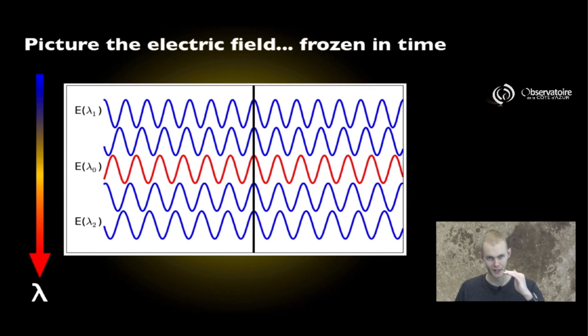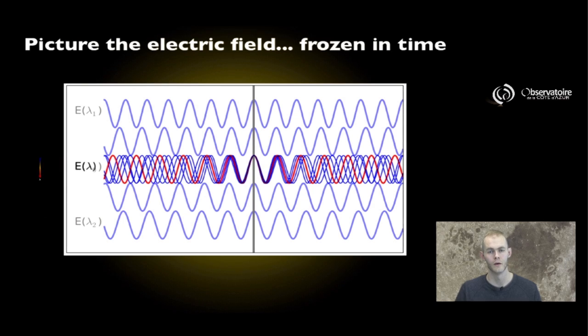If we collapse these electric fields altogether onto one single plot, that correspondence is made much more obvious. There is clearly a point in time and space where the electric fields are perfectly in sync with each other. And as we move away from that place or time, the fields slowly desynchronize with each other.